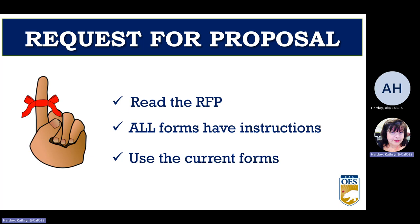Here are a few helpful reminders. One: read the entire request for proposal to understand what is required for the program. Please note that all forms have instructions, so if you have a question about a form, look at the instructions first and then email the program specialist for help. Use current forms — Cal OES updates our forms often. If you're using a form saved on your desktop, it's possible it may have been updated and you'll be asked to redo it, which may delay the processing of your award.